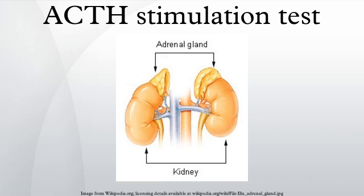Other hormones and chemicals that will rise in the ACTH stimulation test include progesterone (a precursor to cortisol and aldosterone), luteinizing hormone (a pituitary hormone that stimulates sex hormone production), 21-hydroxylase, DHEA, and DHEA-S.